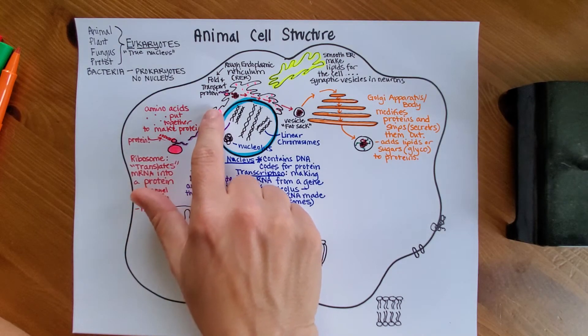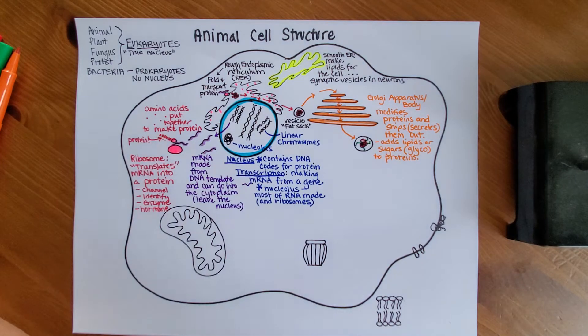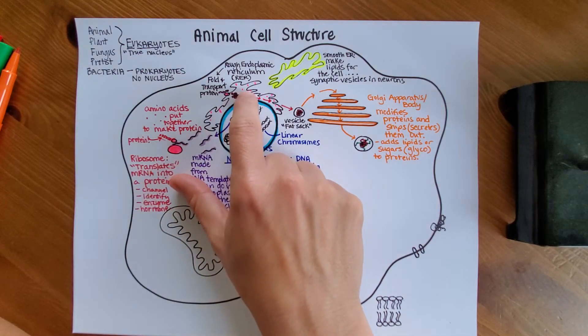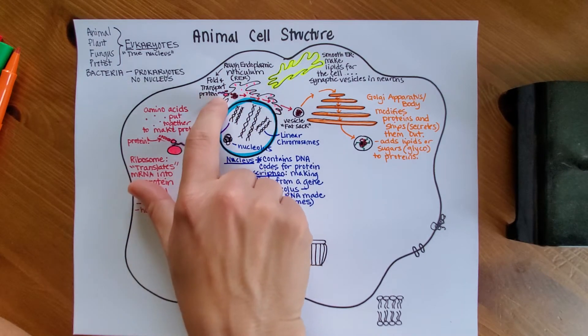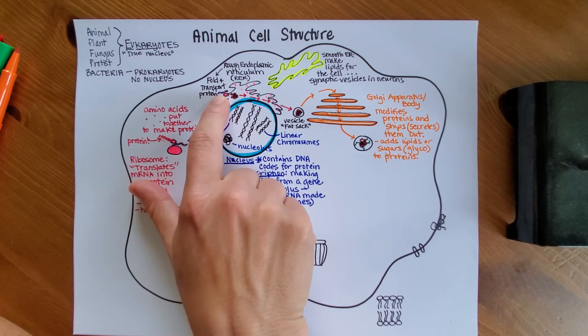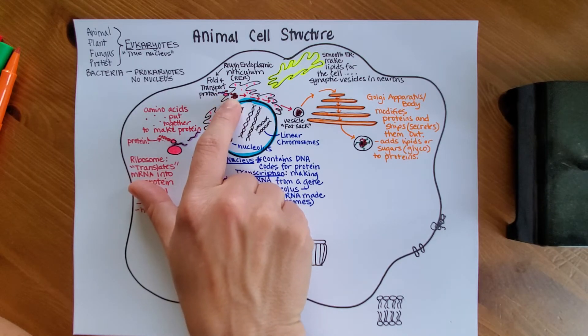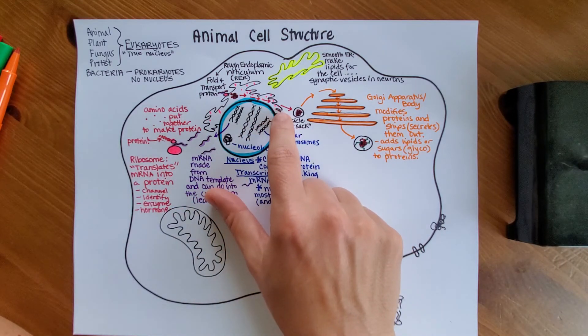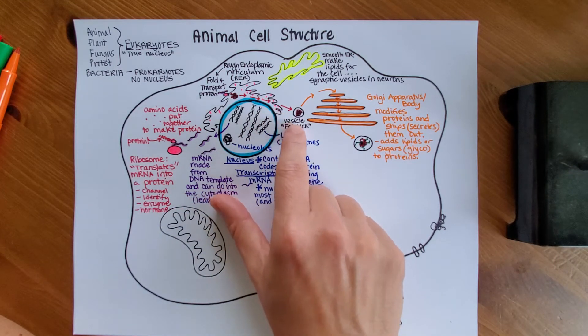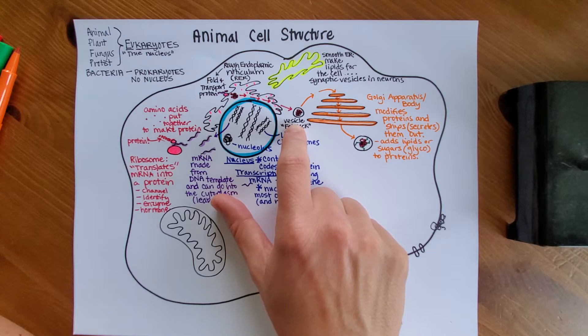A lot of times, ribosomes are found embedded on the endoplasmic reticulum, the series of membranes throughout the cell. Sometimes the mRNA gets translated right through the ribosome and into the ER, and then it gets transported and popped out the end of the ER into what's called a vesicle.